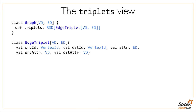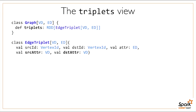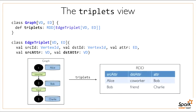Here's what this looks like if we call it on the toy graph we built. If we call triplets, we get back a table—really it should have five columns, but I've omitted the source and destination IDs. This shows that the table encodes things like: the vertex with property Alice is co-worker of the vertex with property Bob.